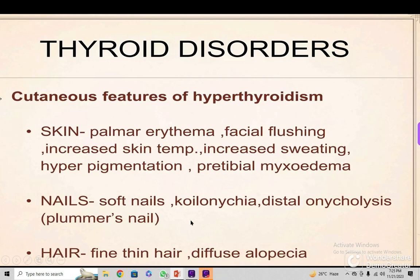These are called thyroid acropathy — they are the peripheral stigmata. The hair is fine and thin, with diffuse alopecia.